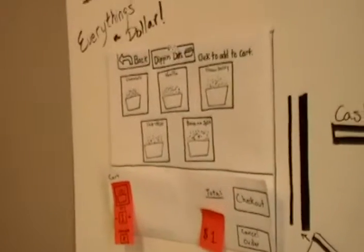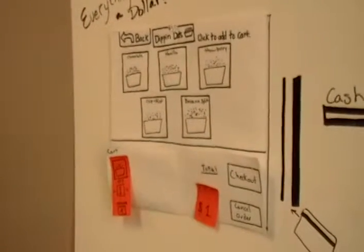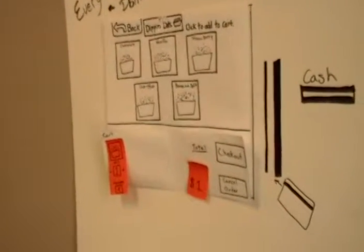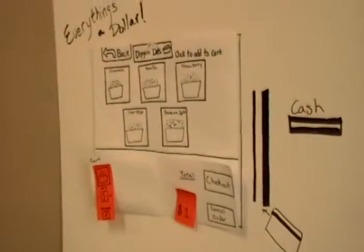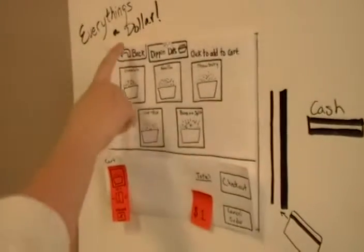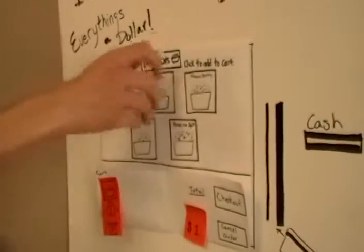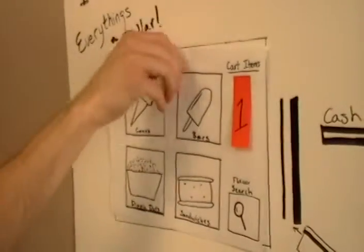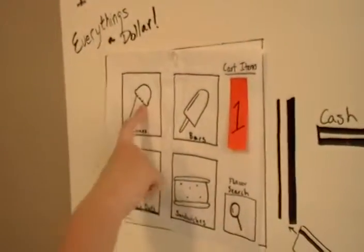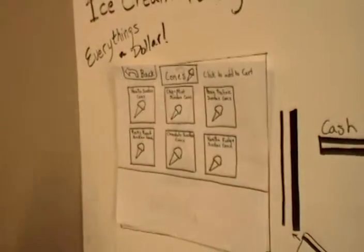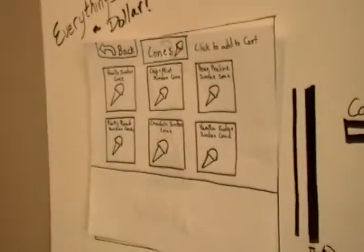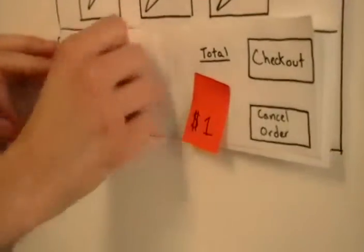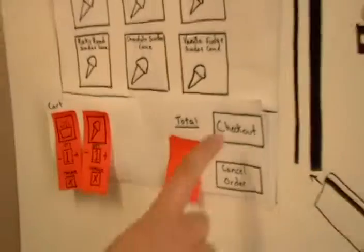Wait — just one. So then checkout. Actually, we'll have you do two different things from two categories. So then one more item. So back. I'll have a cone. I'll have a chocolate chip mint sundae cone. Okay, now I'll click Checkout.